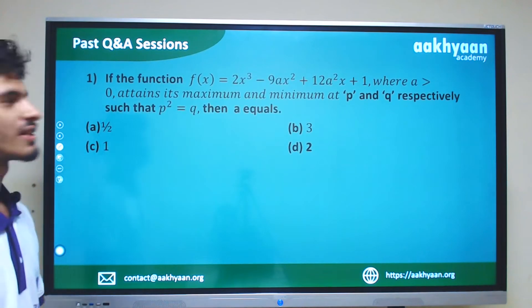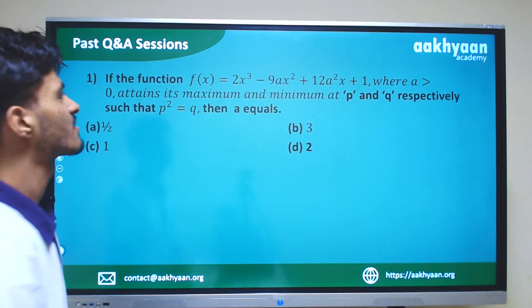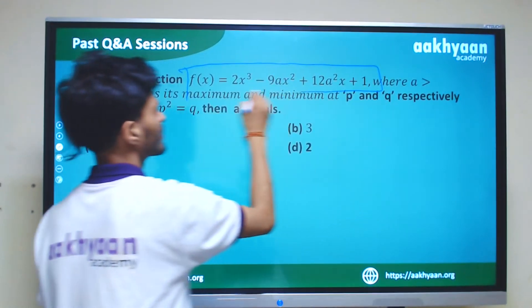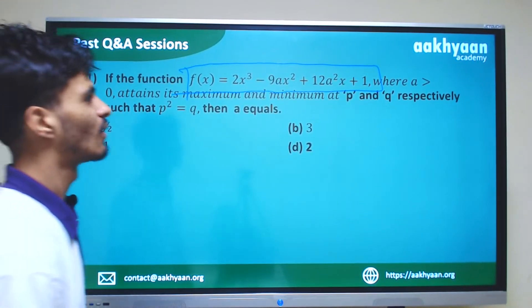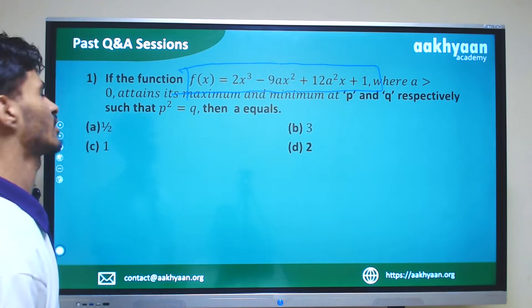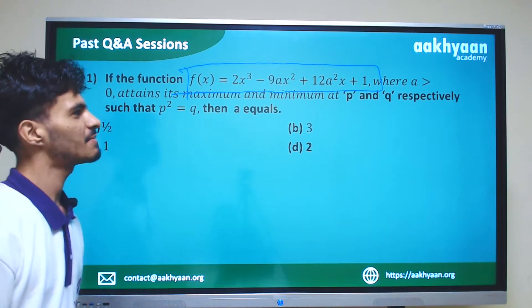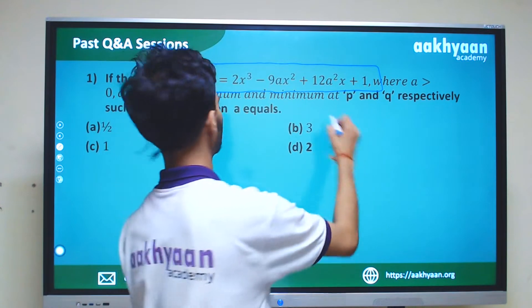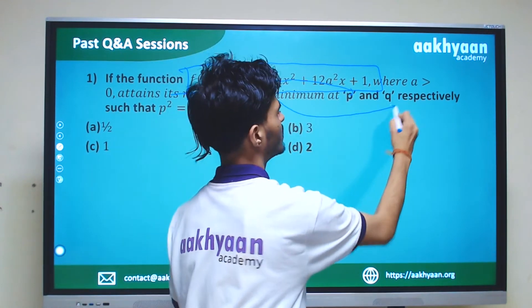For the first problem, I am saying that the function f(x) has a maximum and minimum at p and q, where a is greater than 0. Maximum at p, minimum at q.